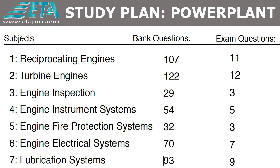Ahora vemos la cantidad de preguntas por tema que aparecerán en el examen de la licencia. Como se puede observar, Turbine Engines tiene el mayor número de ellas con 12, luego Reciprocating Engines con 11, seguido de Lubrication Systems con 9. De los otros temas, aparecerán menor número de preguntas en el examen, por lo que no es necesario dedicarle muchas horas de estudio.